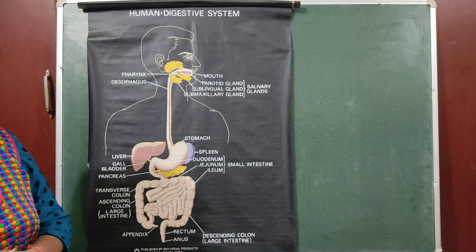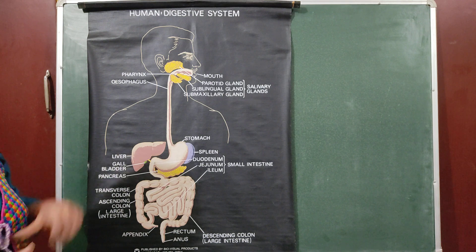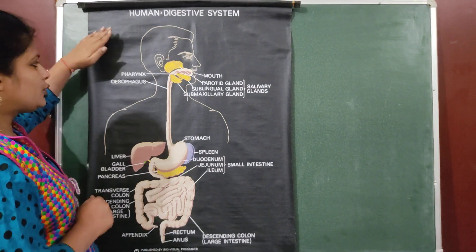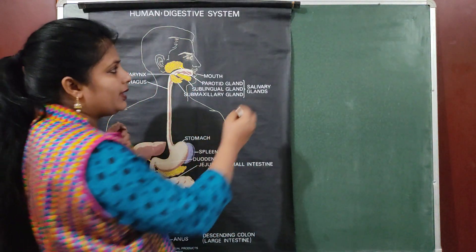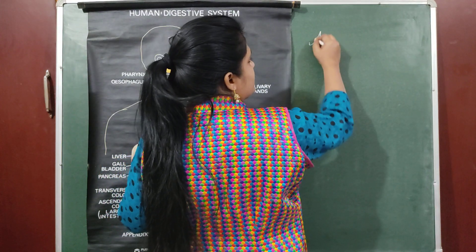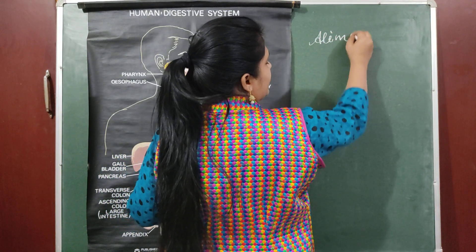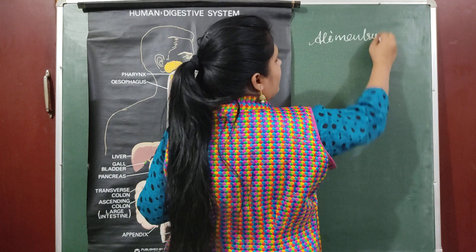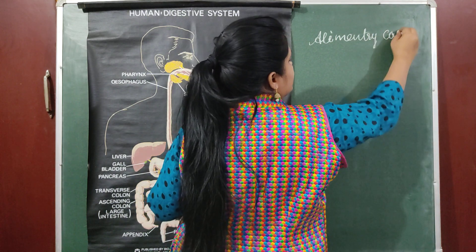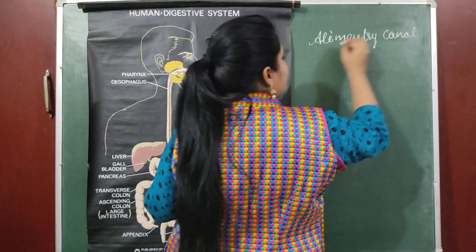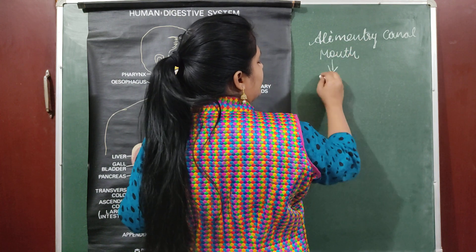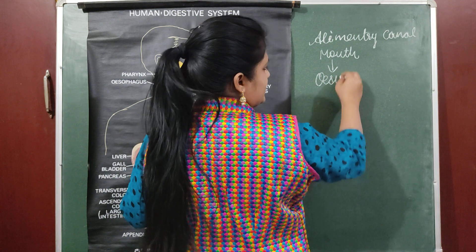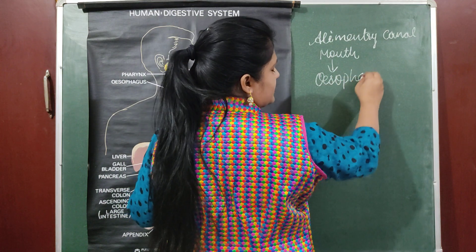In the human digestive system there are two terms which you might read in your book: one is alimentary canal and one is digestive system. Alimentary canal is a part of the digestive system. Alimentary canal includes the mouth; from the mouth food enters into the esophagus, which is the food pipe.